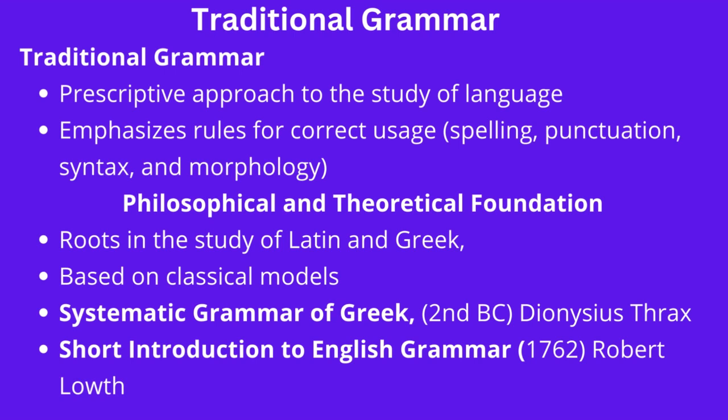Traditional grammar has its roots in the study of Latin and Greek, and it emphasizes the importance of rules for correct usage, often based on classical models. It is influenced by the work of grammarians such as Dionysius Thrax, who wrote the first systematic grammar of Greek in the second century BC, and Robert Lowth, who wrote A Short Introduction to English Grammar in 1762. These were the first key scholars of traditional grammar.